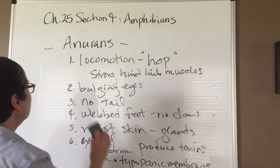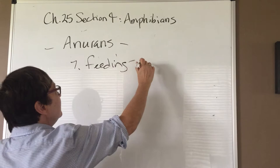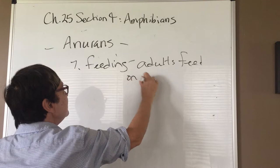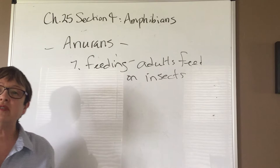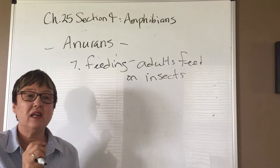Adult frogs feed on insects. They procure those insects by protruding their tongue very rapidly — the end of the tongue is sticky — grabbing an insect out of the air and pulling it back into the mouth. It's quite an effective feeding mechanism.